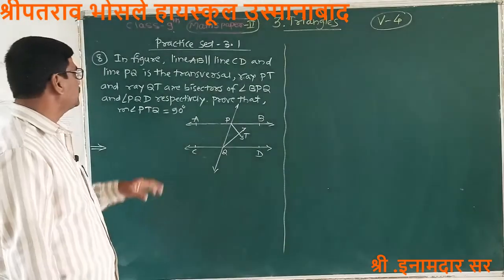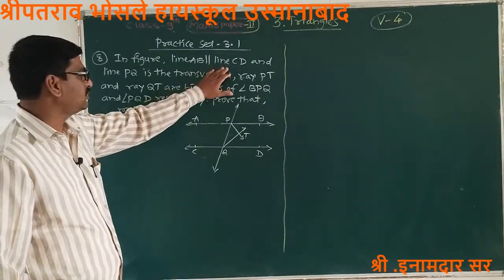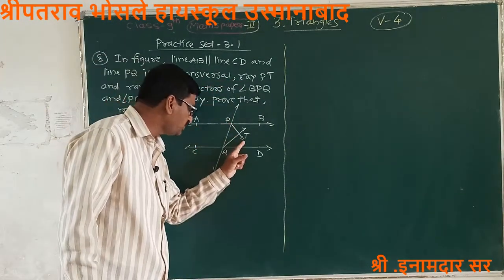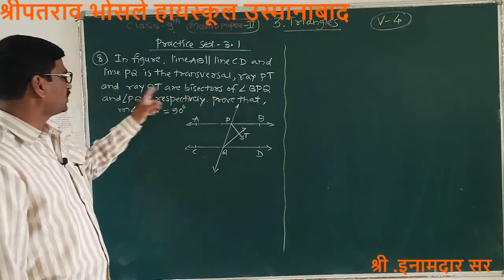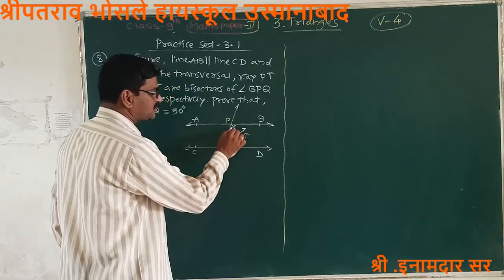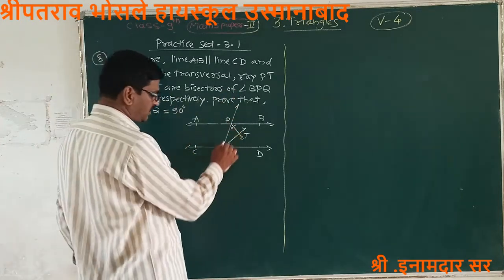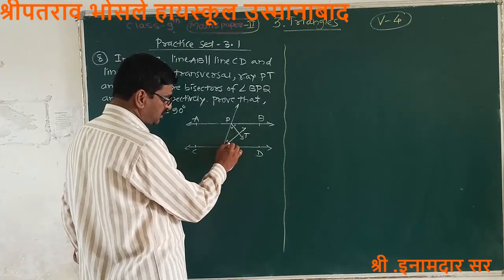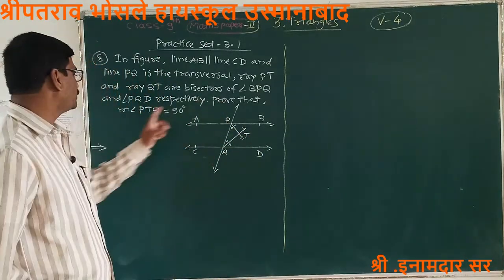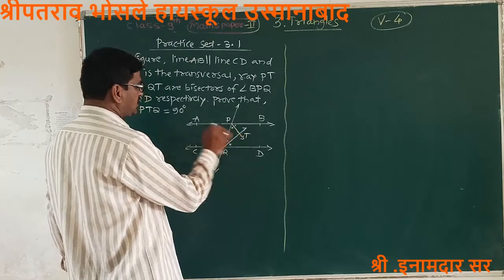Example 8: In the figure, line AB and line CD are two parallel lines, and line PQ is their transversal. Ray PT and ray QT are bisectors. Ray PT is the bisector of angle BPQ — meaning angle BPT equals angle TPQ. Ray QT is the bisector of angle PQD. We have to prove that angle PTQ is equal to 90 degrees.